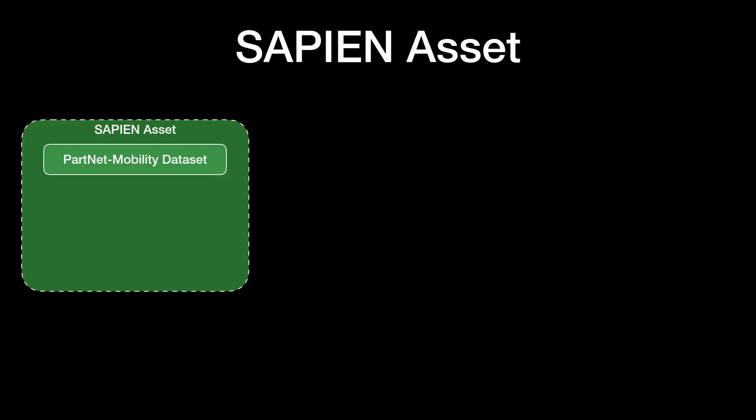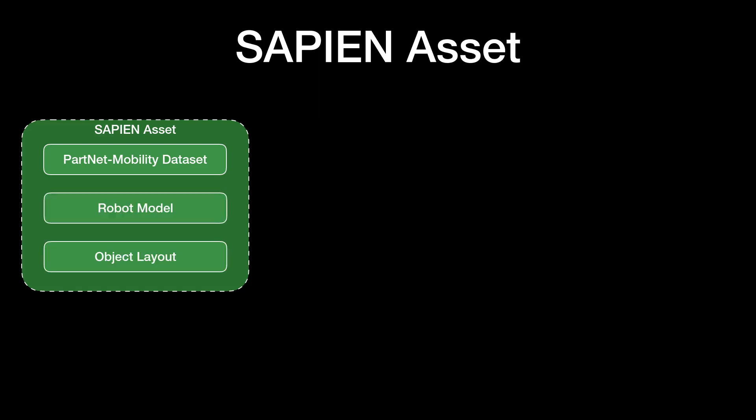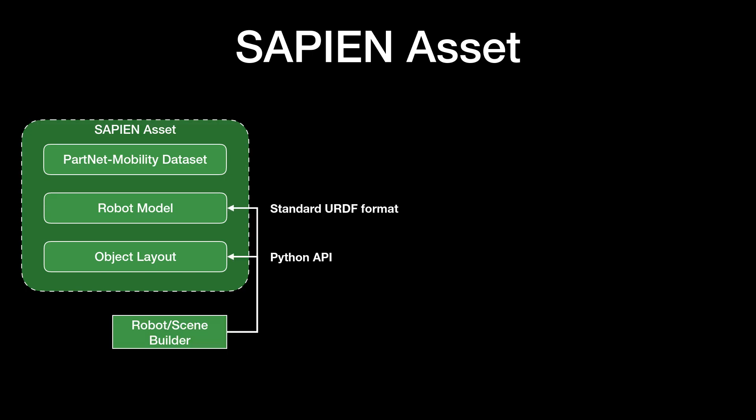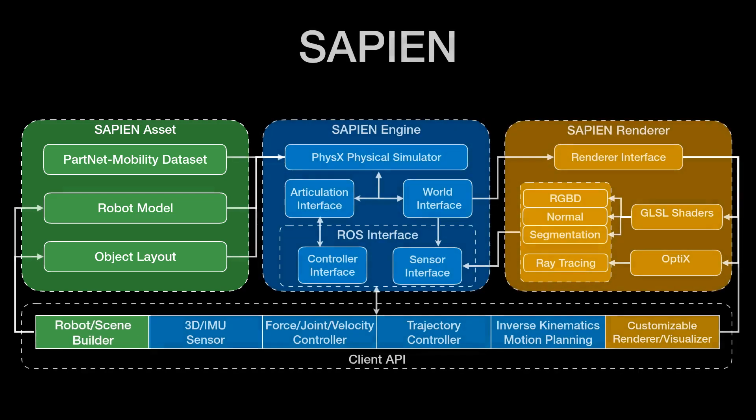Apart from the PartNet Mobility dataset, Sapien also allows building robot models, new articulated objects, and object layouts through the standard URDF format. URDF stands for the Unified Robot Description Format; it is supported in most robot software and other simulated environments. In Sapien, we also support building robots and objects through a Python API. Combining the engine, renderer, and assets, here we have the whole architecture of Sapien.